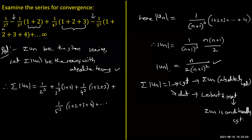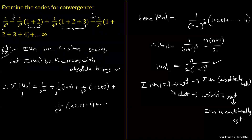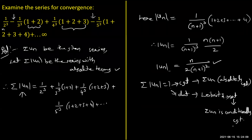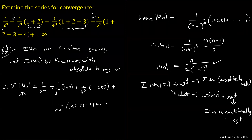In the Leibniz test, we simply ignore the signs and verify two conditions: (1) u_{n+1} ≤ u_n, and (2) lim (n→∞) u_n = 0. If both conditions are satisfied, the series is convergent. If earlier summation |u_n| was divergent but the Leibniz test gives convergence, we conclude that summation u_n is conditionally convergent.